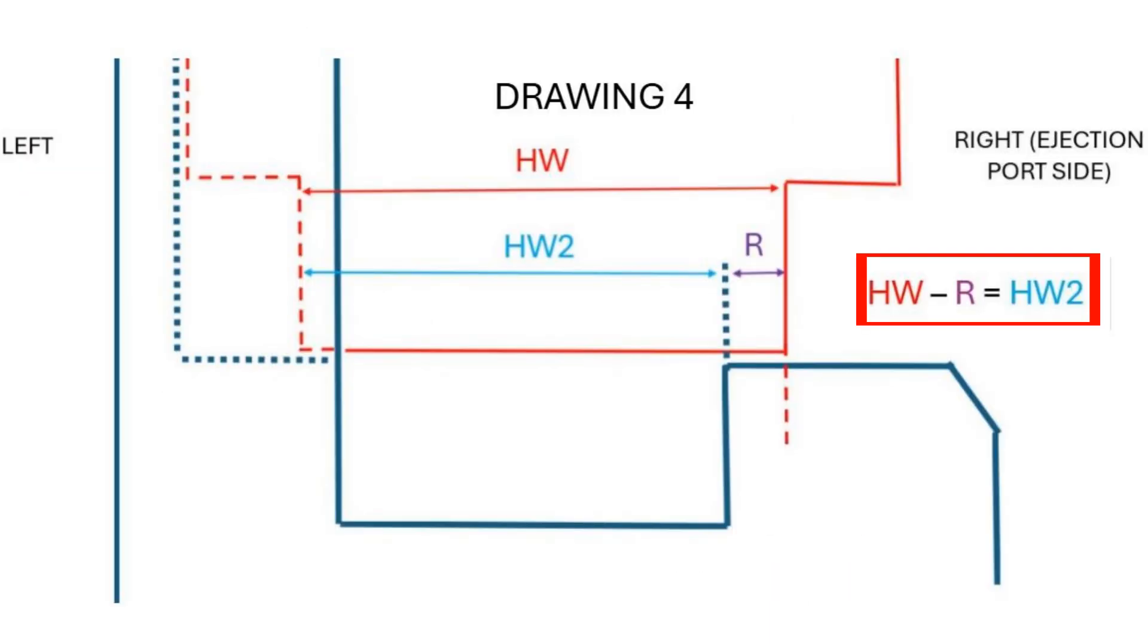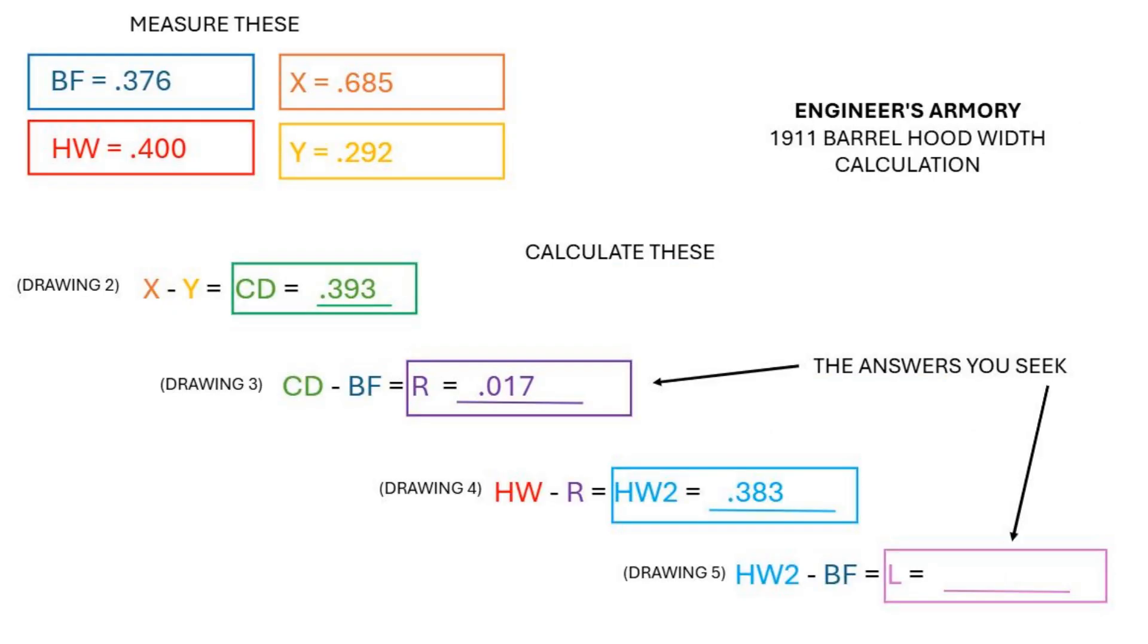Now subtract R from HW the hood width and think of this like we just machined R off the right side of the hood and now our hood width is more narrow. So this is a new hood width and I'm going to call it HW2. My new hood width HW2 is 0.383.